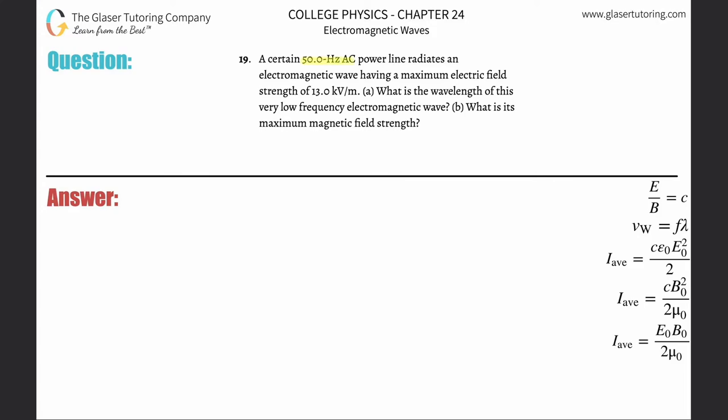Number 19: A certain 50 Hertz AC power line radiates an electromagnetic wave having a maximum electric field strength of 13 kilovolts per meter. Letter a: What is the wavelength of this very low frequency electromagnetic wave? Disregard the electric field strength because it is unimportant.